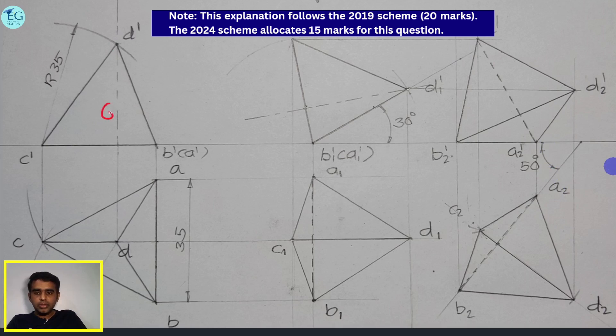The marking scheme is 6 marks for first stage simple position, projection after first rotation is 4 marks, projection after second rotation is 3 marks, and 2 marks for neatness and dimension.